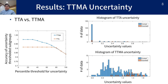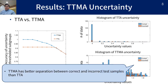In the histogram of test time augmentation uncertainty, it can be seen that correct and incorrect samples are both present at zero uncertainty. In the histogram of our test time mixup augmentation uncertainty, there is a region where only correct samples are distributed in a low uncertainty area. From these distributions, we can confirm that our test time mixup augmentation has better separation between correct and incorrect samples than conventional test time augmentation.